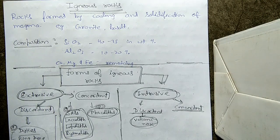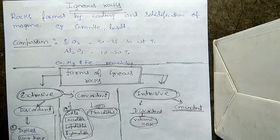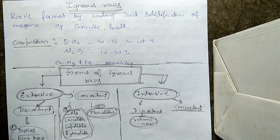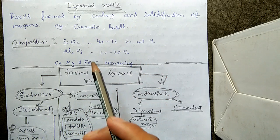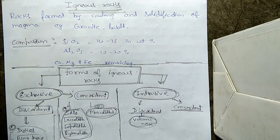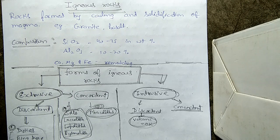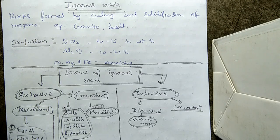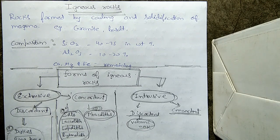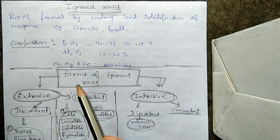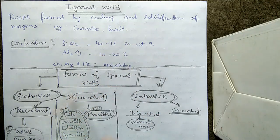Hello friends. In this video we are going to learn about igneous rocks — what are igneous rocks, what is their composition, and the different forms of igneous rocks. Igneous rocks are generally rocks that are formed by cooling and solidification of magma. Magma is basically a molten material found inside volcanoes or inside the earth's surface. Examples of igneous rocks include granite, basalt, and many more.